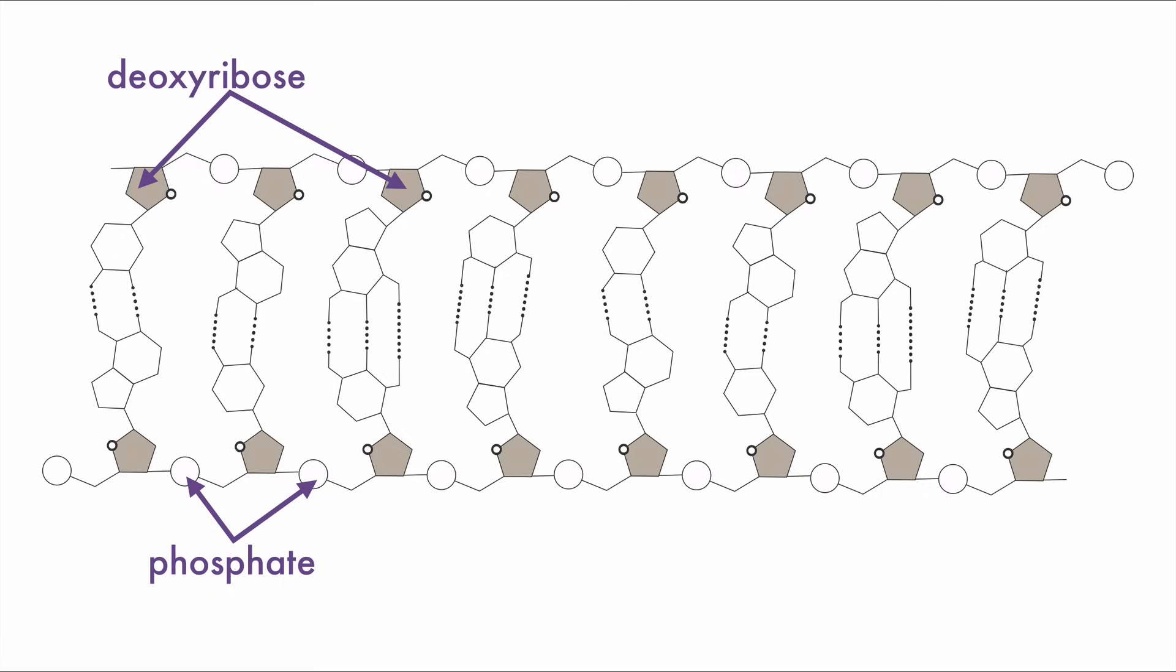Next we need to remember a rhyme: AT2, CG3. So the nucleotides with two hydrogen bonds must be A and T, and the ones with three are C and G.